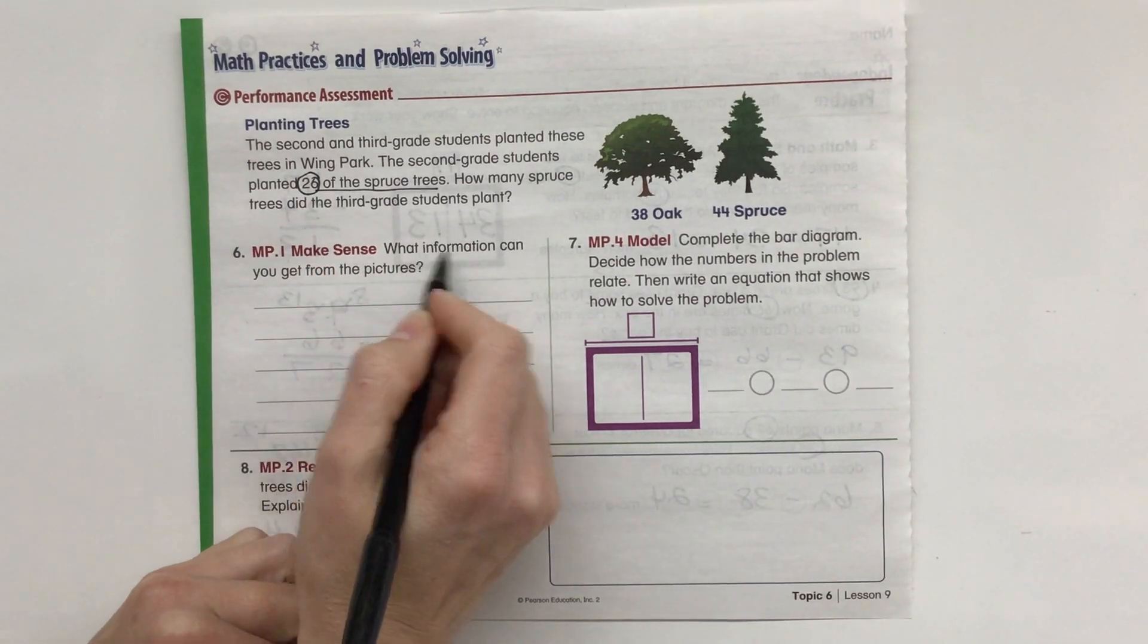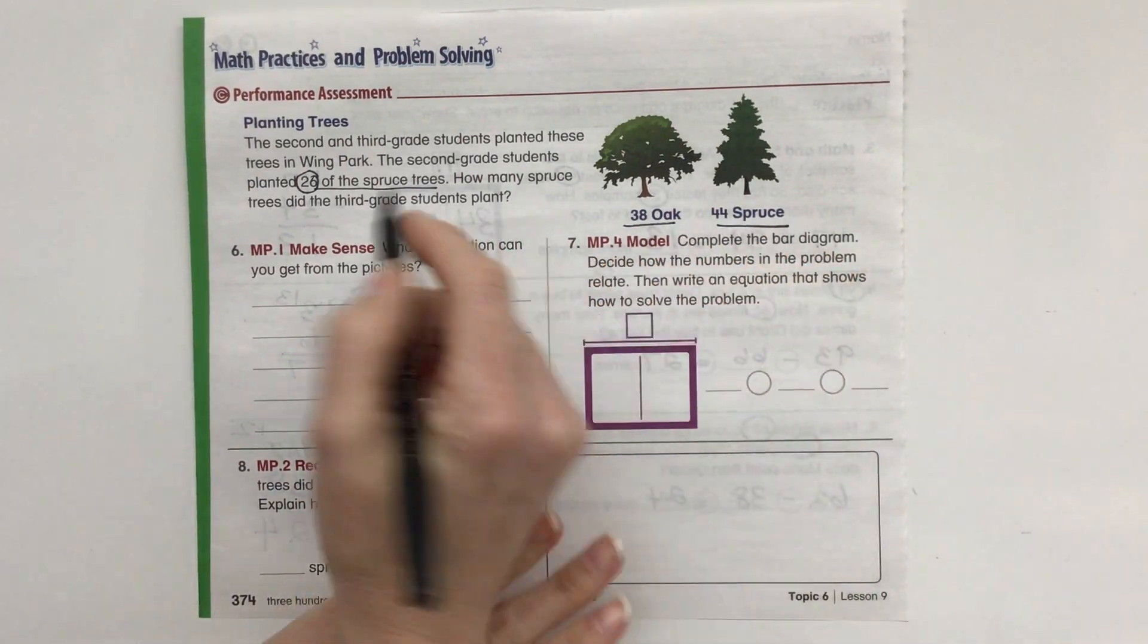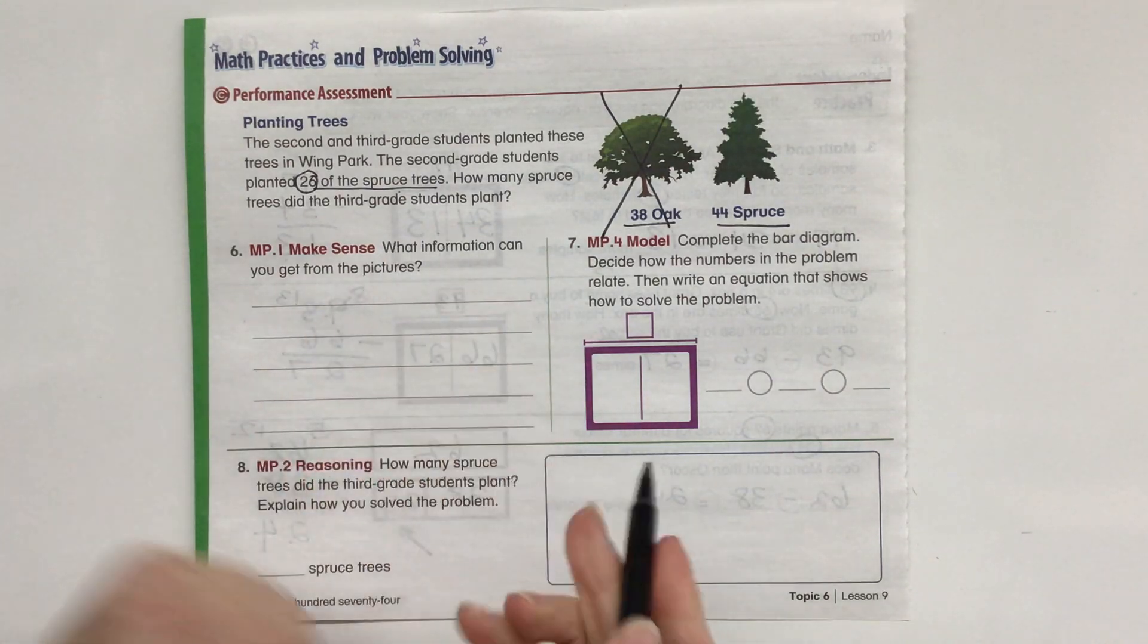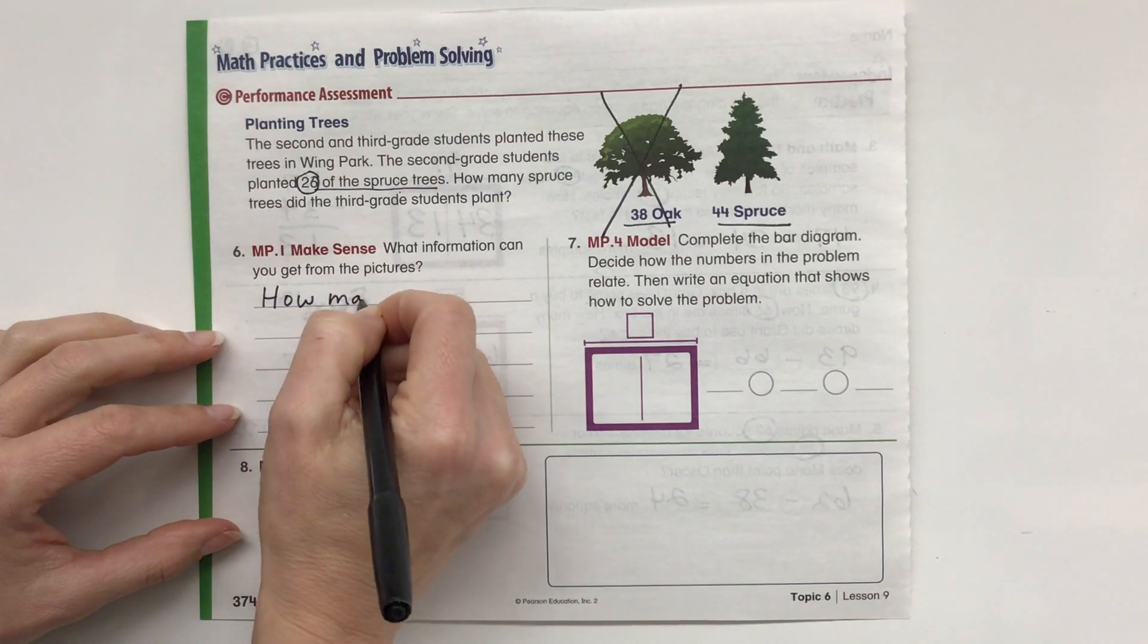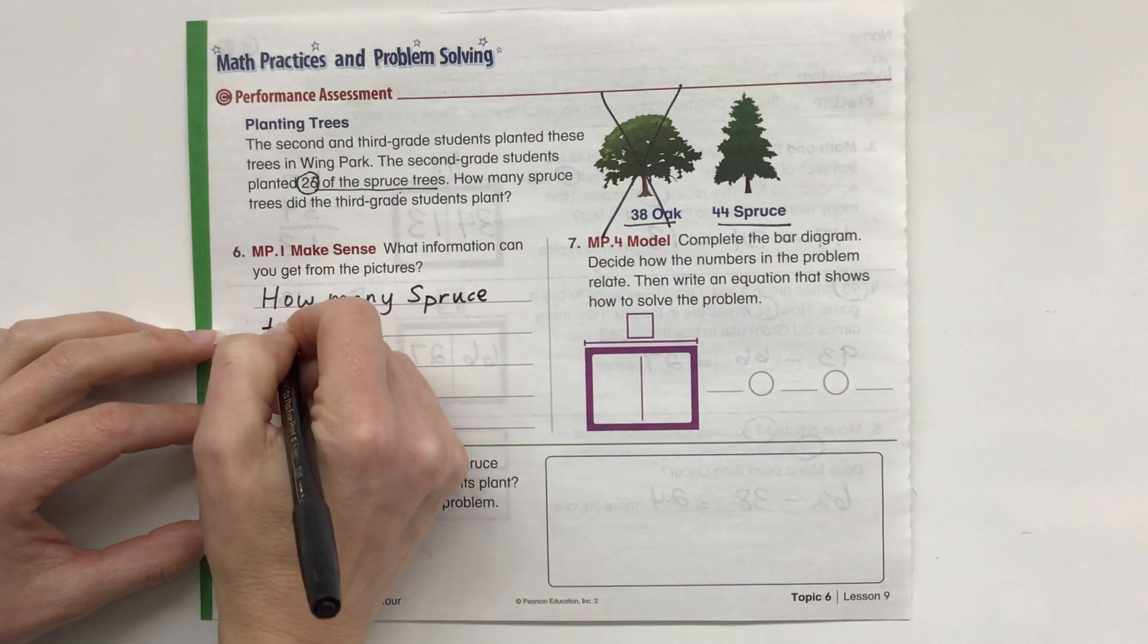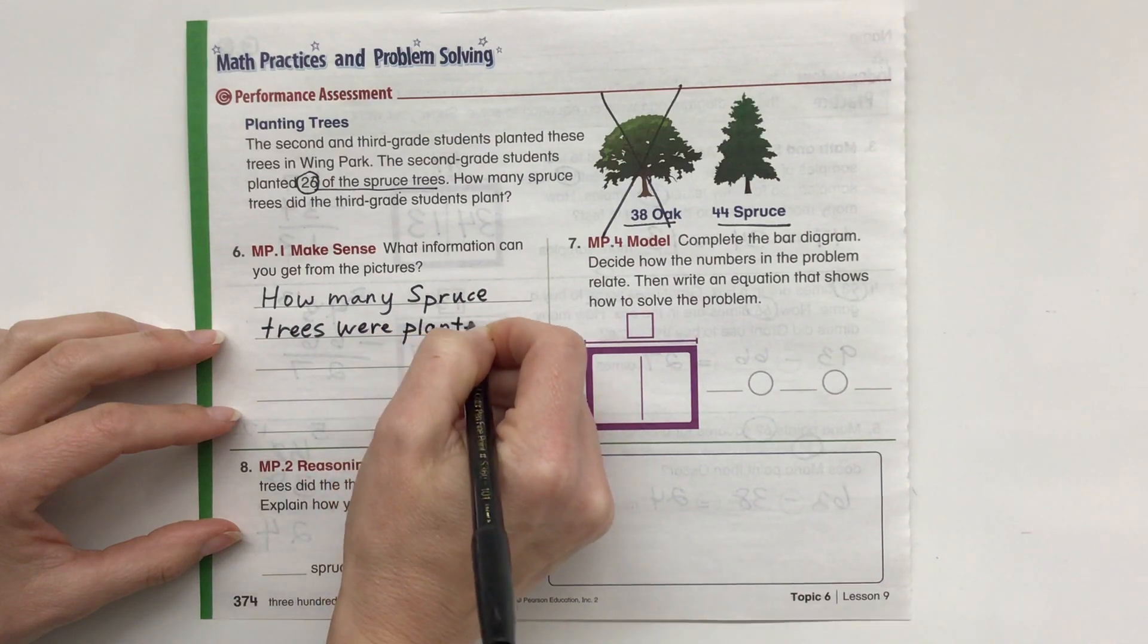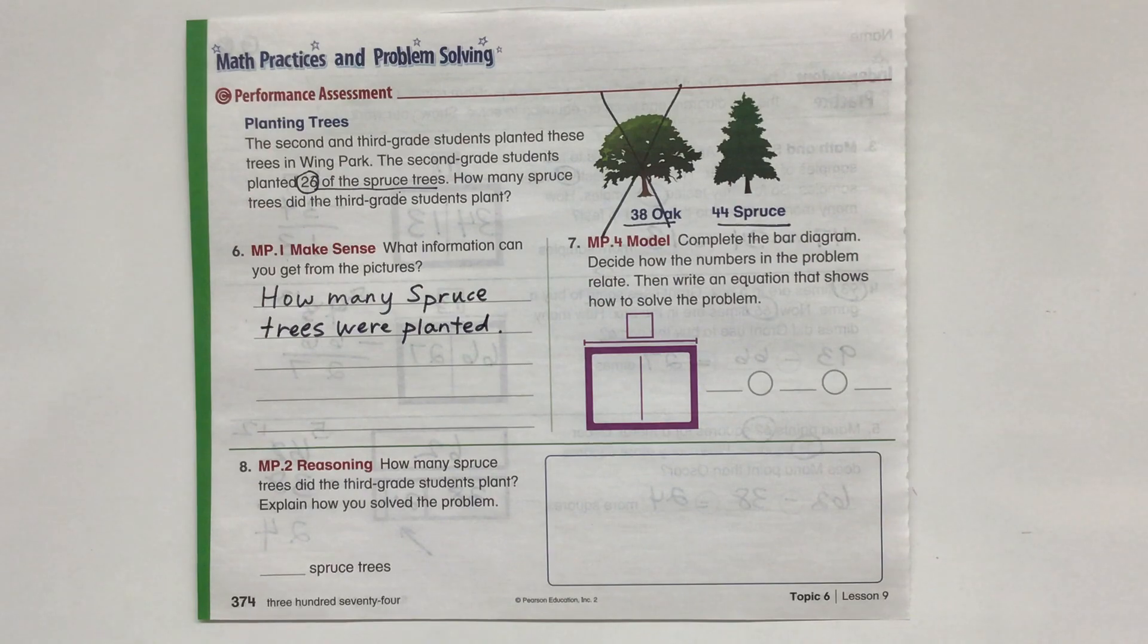So what we need to do, what information can you get from the picture? Well, we know about oak trees and spruce trees. We only need to know about spruce trees. We don't need to know about oak. So I'm just going to cross that out. What information can you get from the pictures? Here's how many spruce trees were planted. Now we need to complete the bar diagram.